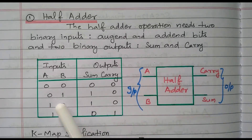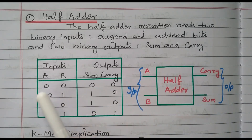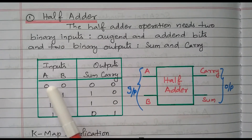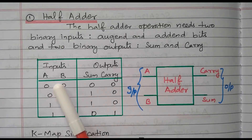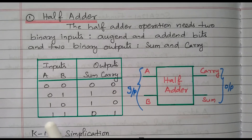Now we will refer the truth table. The two inputs are A and B. Because of A and B being two inputs, there are four possibilities available: 0-0, 0-1, 1-0, and 1-1.